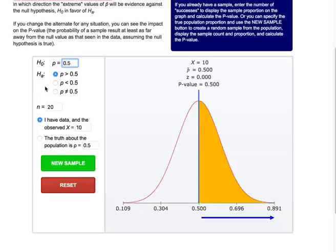And our alternative hypothesis HA: p greater than 0.5. Then below, we need to provide a sample size. Let's pretend that we are going to flip the coin 50 times, so n equals 50. Finally, I notice that there are two options available to me. I have the data and the observed x equals blank or the truth about the population proportion p is blank.